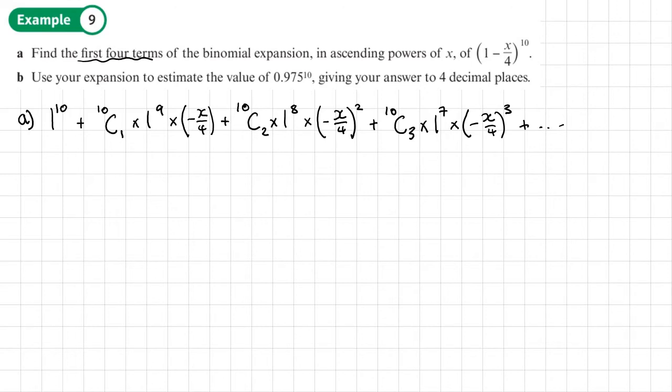And what we need to do now, as we normally do, is to simplify. So one is the first term. Then 10C1 is 10 times 1 is 10 times (-X/4) is going to give us plus. Now we can write this as, actually writing like this for now, and then we'll simplify in a moment.